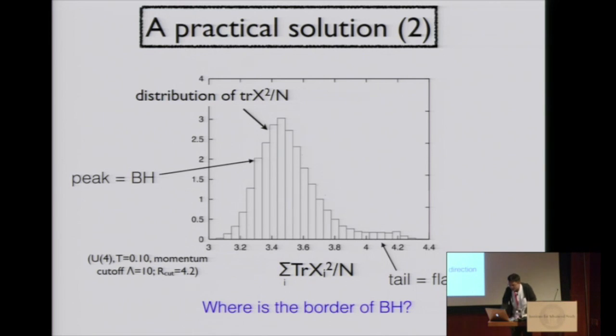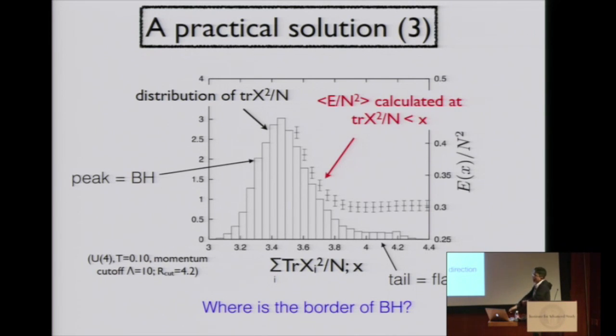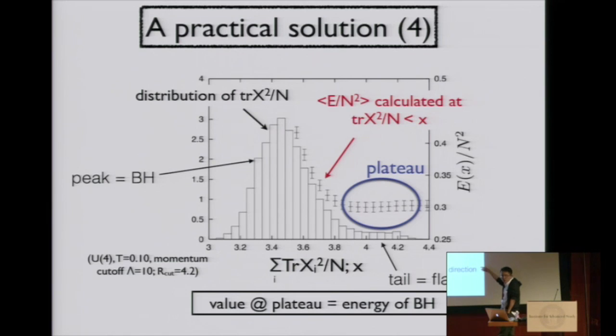How can we separate it from black hole from other configurations? We try to calculate the energy by introducing cutoff for this value. Here I calculated the energy using only these configurations. Here I calculated the energy using only these configurations and so on. Of course, results depend on the cutoff value. But luckily we can see clear plateau here. So we don't know where the border of the black hole, but it should be around here. I don't know the exact position. But the result doesn't depend on the detail, the concrete value of the border.